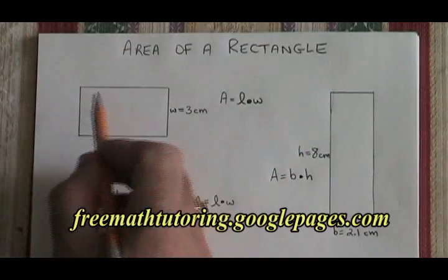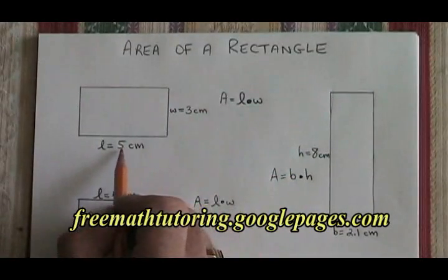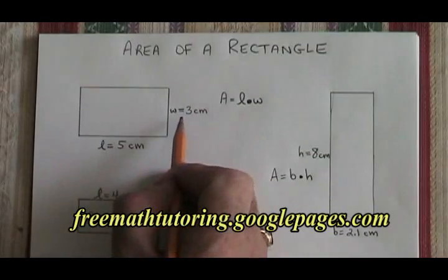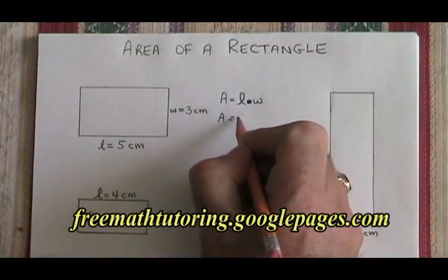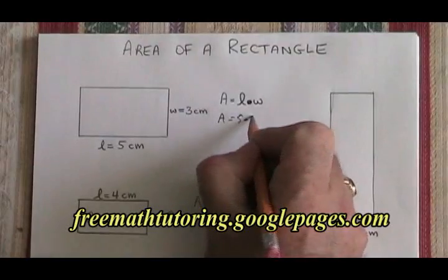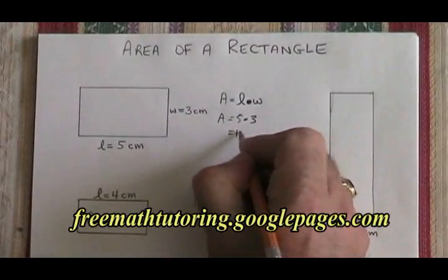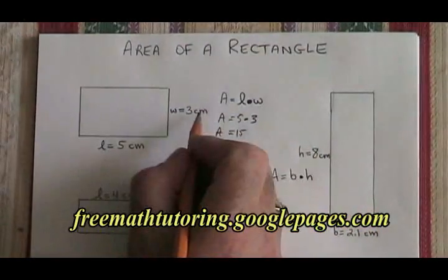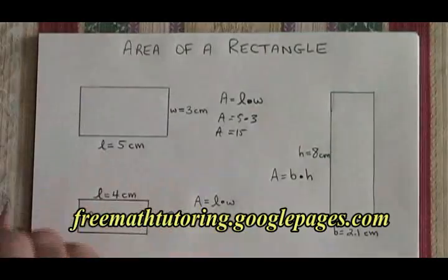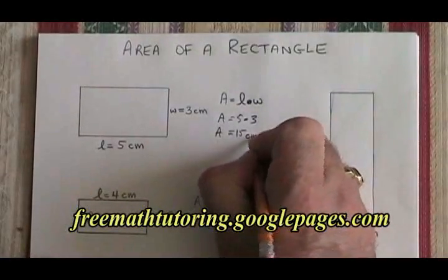In the case of this rectangle, we know the length is 5 centimeters and the width is 3 centimeters. So our area is equal to 5 times 3, which is equal to 15. The unit was centimeters, so the unit of area will be centimeters squared.